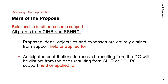The onus is on you as the applicant to provide sufficient information for the evaluation group to determine that you have met these requirements. You must attach the scanned summary and budget pages from any SHRC and CIHR funding held or applied for. Failure to clearly demonstrate that the research is distinct from that held or applied for through SHRC and CIHR warrants a rating of insufficient for the merit of the proposal criterion. This applies to DG applicants who receive or plan to receive funds from CIHR or SHRC, regardless of their role on the grant.